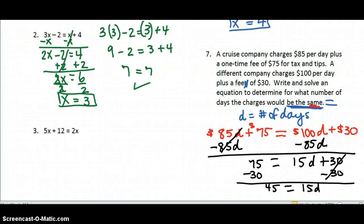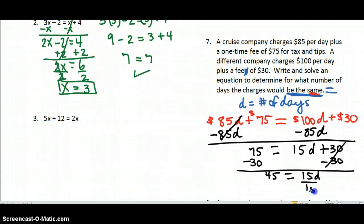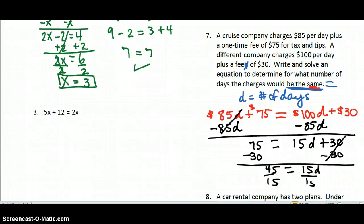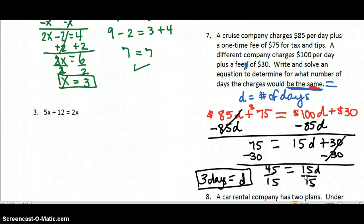15D equals 45. And hopefully we all know how to finish solving that equation. Divide by 15. Divide by 15. And we find out that D should equal what? 3. So it's 3 days. So after 3 days, it won't matter which cruise you take. They'll be equal after 3 days. So if you're only going to go on a 2-day cruise, you need to look for the better bargain. But after 3 days, they're going to be equivalent.